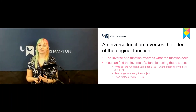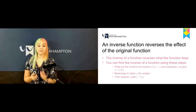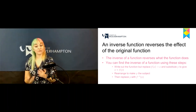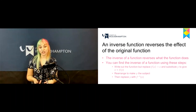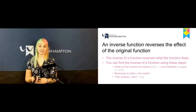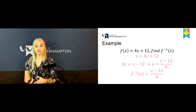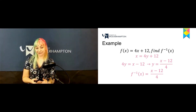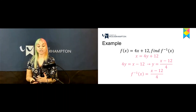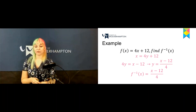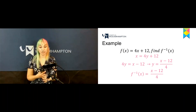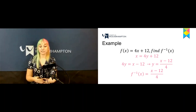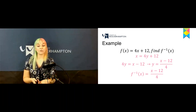An inverse function reverses the effect of the original function. You can find the inverse by following three steps: write out the function, rearrange, then replace. For example, starting with x equals 4y plus 12, rearrange to get 4y equals x minus 12, then y equals (x minus 12) over 4. So the inverse function f inverse(x) equals (x minus 12) over 4.